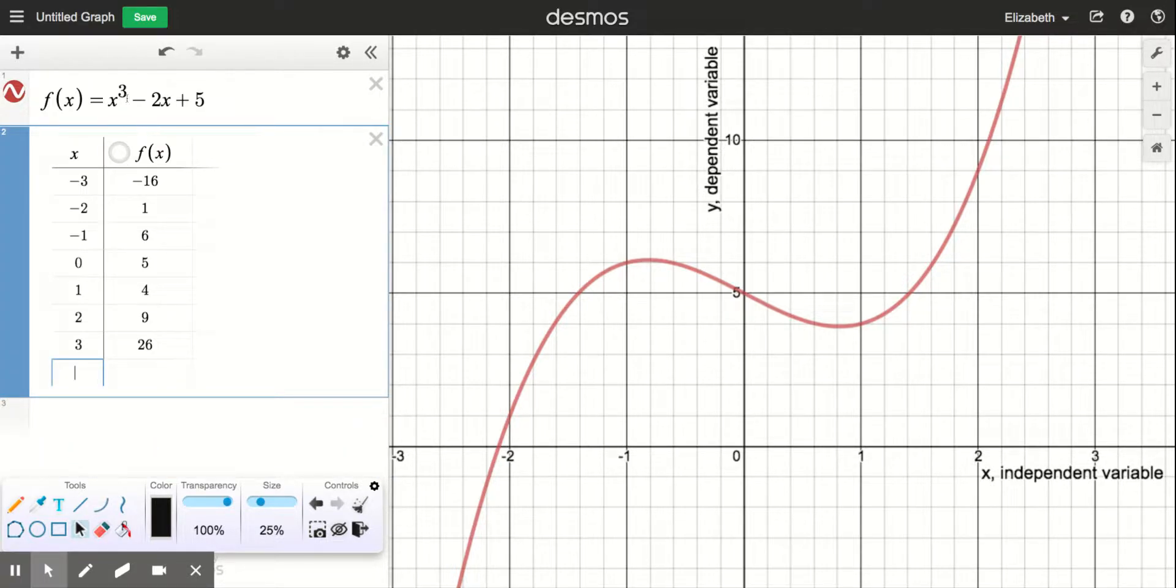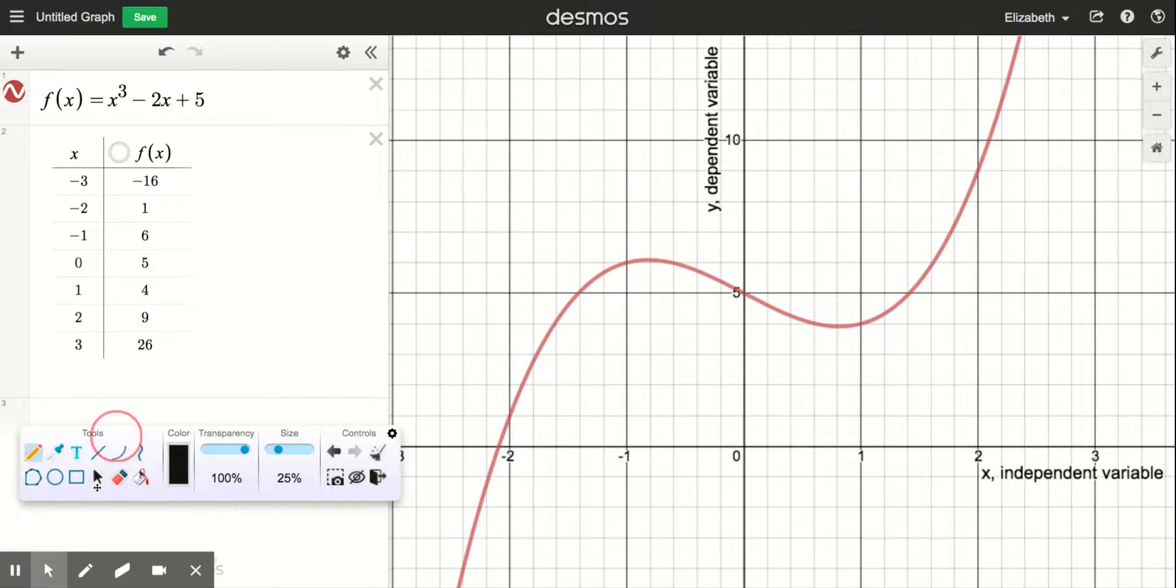Sometimes the equation gives us a little more flexibility when we're looking for a specific point on the graph. The table and the graph allow us to see how the function is changing overall.